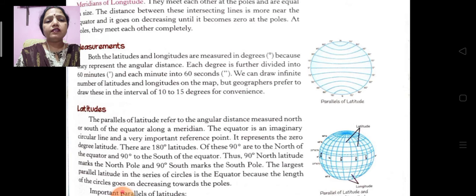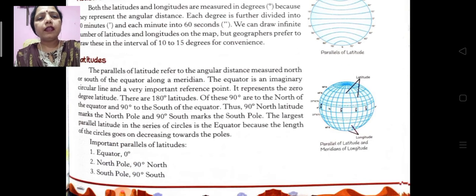Thus 90 degree latitude marks the north pole and 90 degree south marks the south pole. The largest parallel latitude in the series of circles is the equator because the length of the circles goes on decreasing towards the poles.